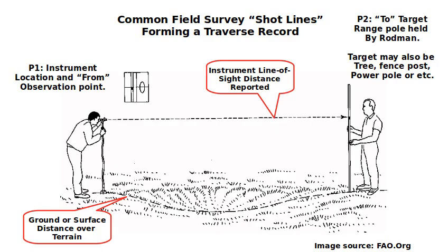What happens in the field? Typically there's an instrument man who's taking the observations. He's got not just a pole but sometimes a tripod with an instrument. At a distance somewhere that's still visible is a rod man with his range pole, and this is typically the distance that's shot — what they call a shot line or that shows up in a traverse record. P1 is where the instrument observation is, and P2 is the target. Note that ground distance can be longer than sight distance when going over hills or in very rough terrain or for very long shots.